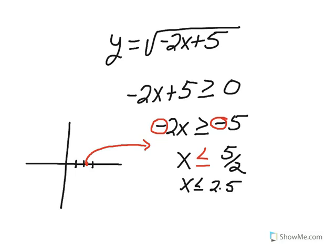When we work this out, what we see is that negative 2x plus 5 must be greater than or equal to zero, because that is the radicand, the part that is underneath the square root. When we solve this, we subtract 5 from both sides.